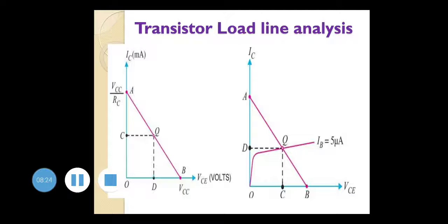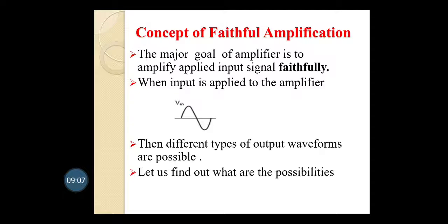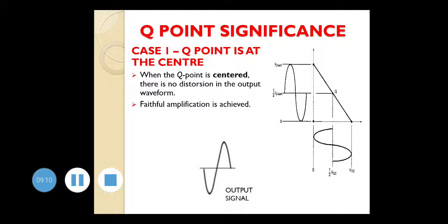Now we will study the Q point, also called the operating point of the transistor. Once you draw the transistor load line, you must set the Q point at the center of the load line — only then will you get faithful amplification of the signal. The goal for the Q point is to set it at the center of the load line. If the Q point is exactly at the center of the transistor load line, faithful amplification will take place.